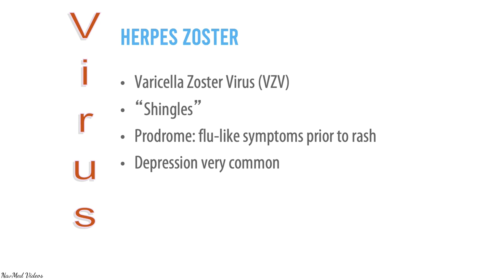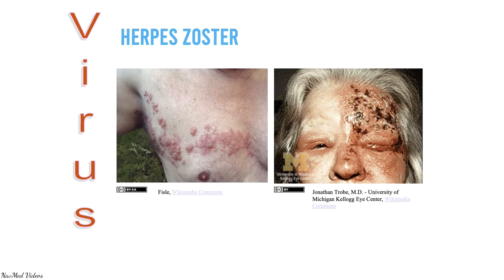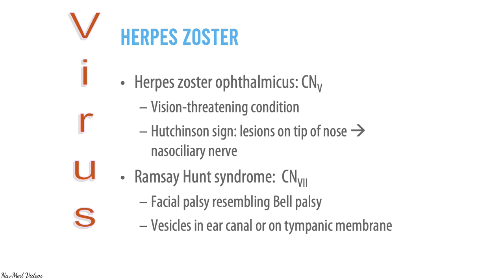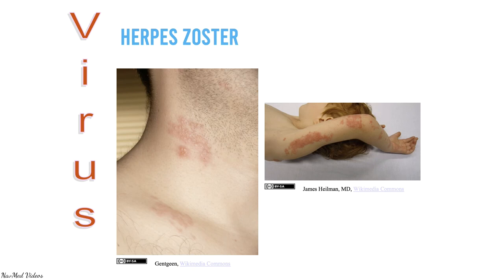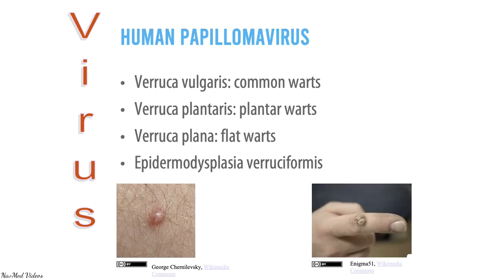Varicella-zoster virus causes herpes zoster (shingles). Flu-like symptoms precede the rash, and depression is very common. The important feature is that it spreads along nerve distributions. Herpes zoster ophthalmicus occurs when it affects cranial nerve V1, a vision-threatening condition with lesions on the tip of the nose (Hutchinson's sign, nasociliary nerve involvement). Ramsay Hunt syndrome is a seventh nerve palsy resembling Bell's palsy, with vesicles in the ear canal or on the tympanic membrane.